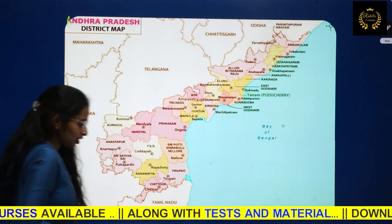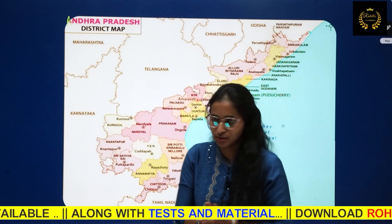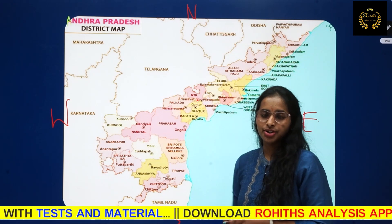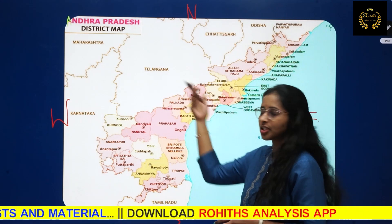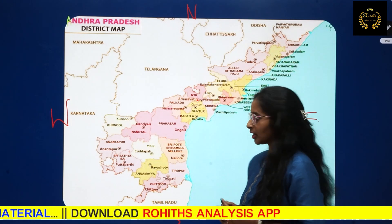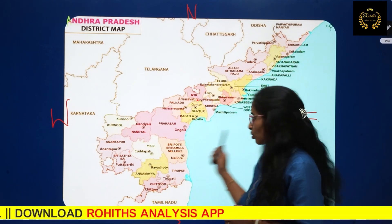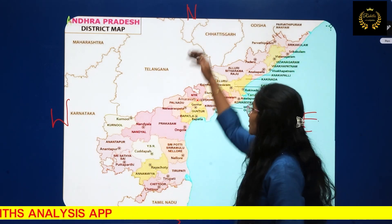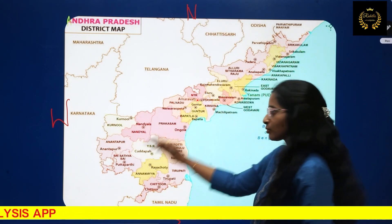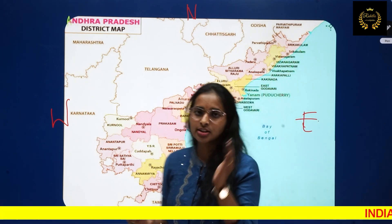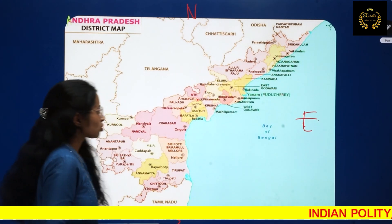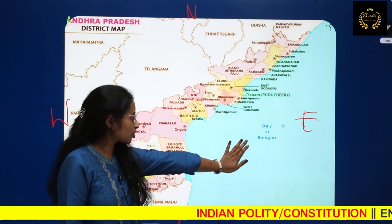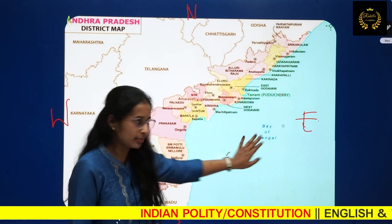Let's get into the map of Andhra Pradesh with the particular districts — which district shares border with which state, and how many districts share borders. Let's also look at coastal region borders. Andhra Pradesh is located in the southeast part of India; the eastern part is the coastal region covered by the Bay of Bengal.